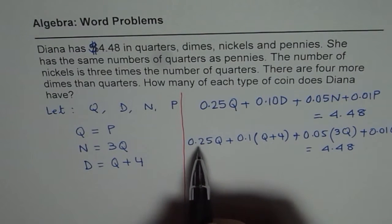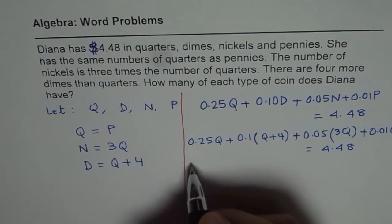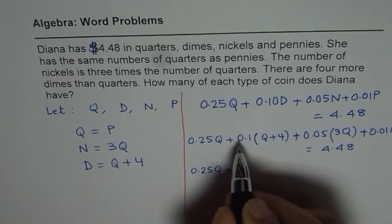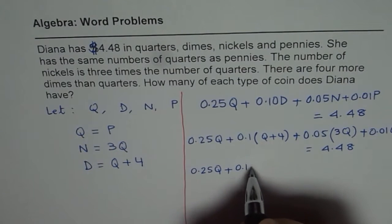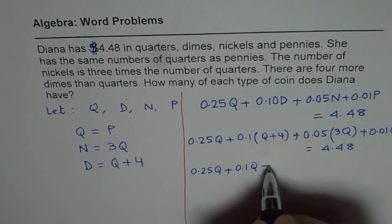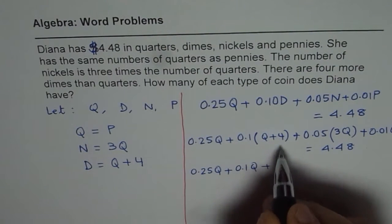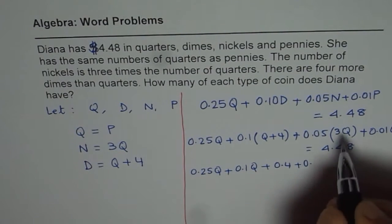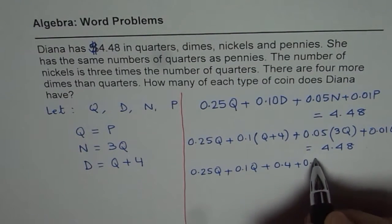So let's count how many quarters we have. So now I'll write this as 0.25 quarters plus 0.1 quarter.